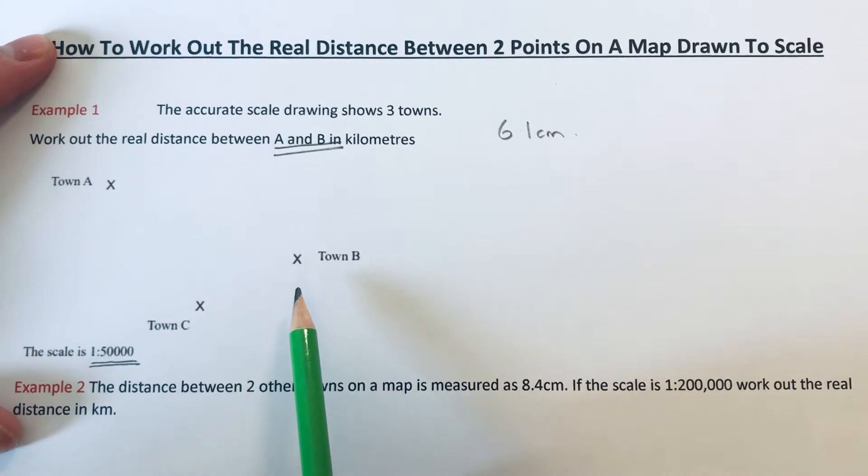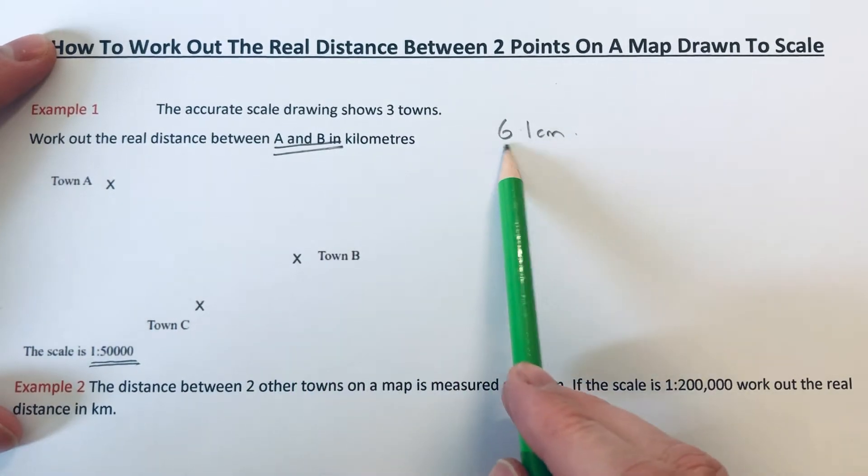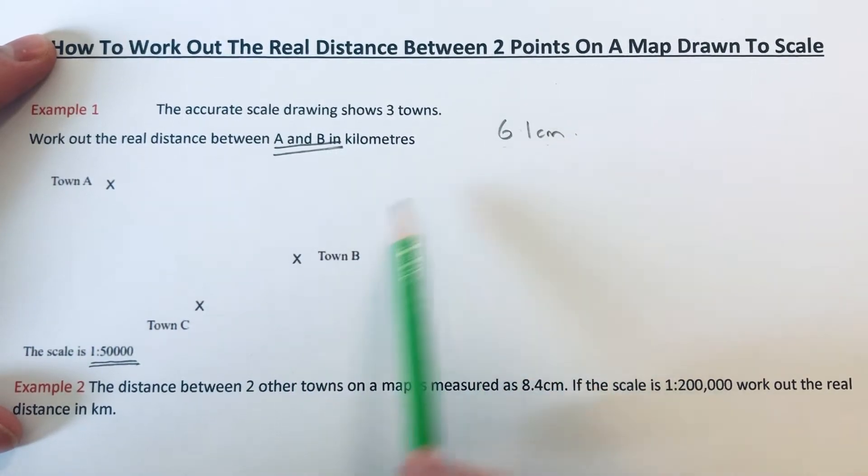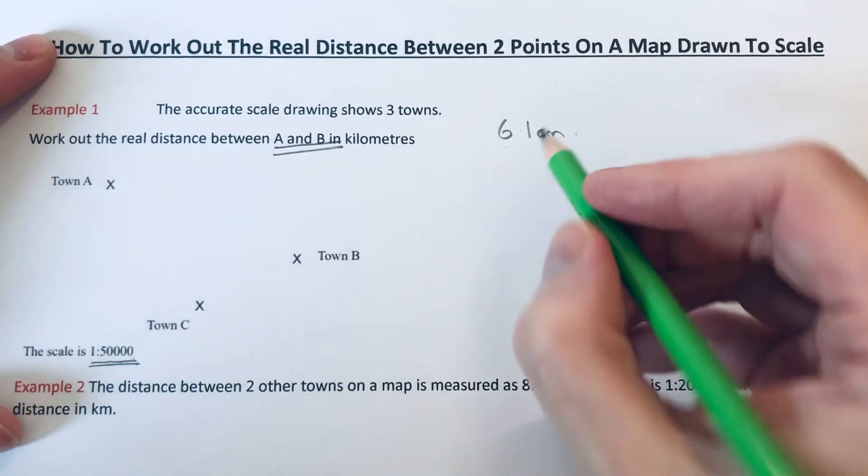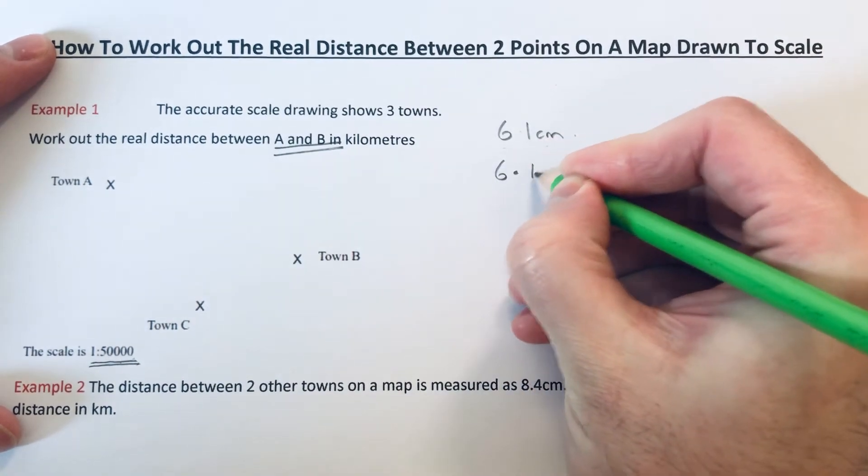To get the real distance, we need to multiply the 6.1 by 50,000. The reason for this is because one unit on the map is 50,000 units in real life.